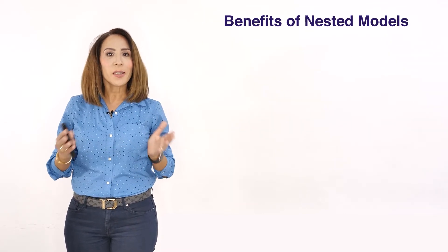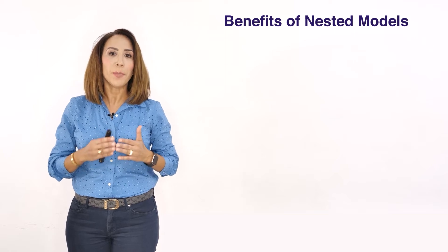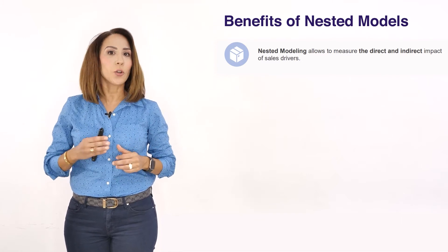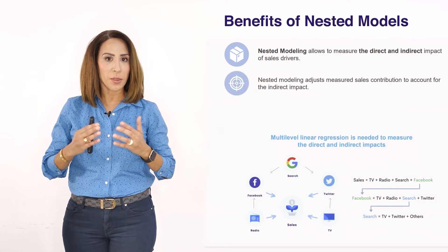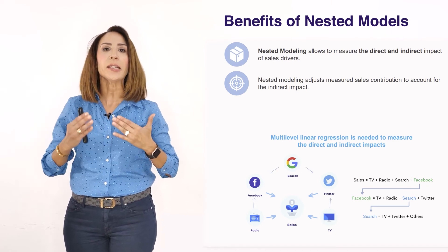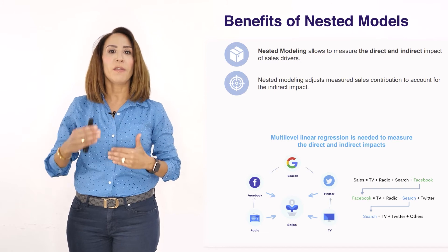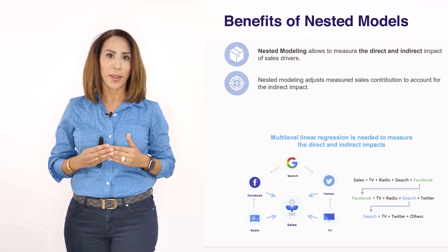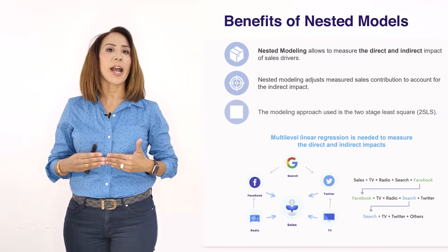So we need to find a solution. Nested modeling presents many benefits — probably the most important is that we are capable of measuring both the direct and indirect impact of every single channel, allowing us to adjust contribution and ROI to reflect the true full contribution of every media and marketing variable. In the graph shown in the slide, different relationships between media channels are taken into consideration when estimating the main model. The method we use to estimate these equations is the 2SLS method.